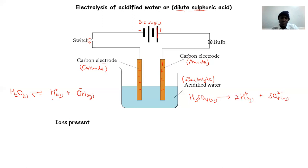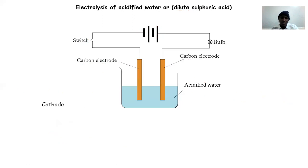So these are the ions present in our solution. Now let us see what will happen when we close the switch. We have our cathode and our anode — the anode is positively charged while the cathode is negatively charged. In our solution we have the hydrogen ions, the sulfate ions, and the hydroxide ions.